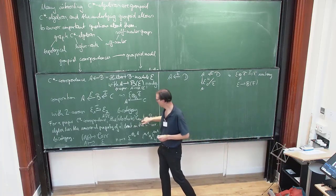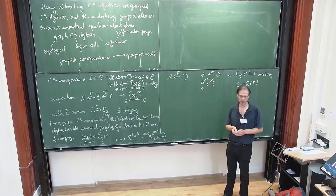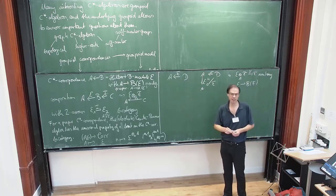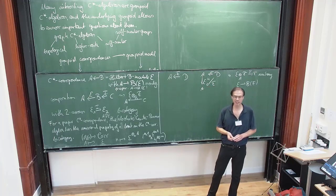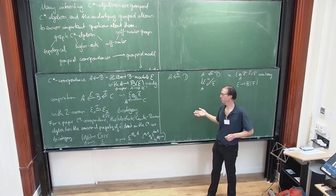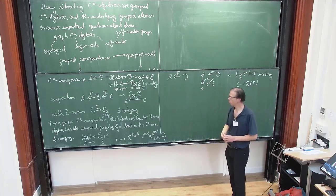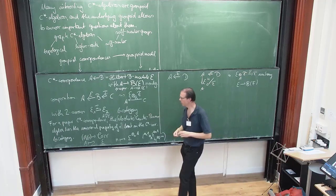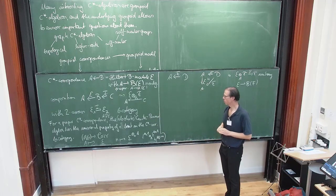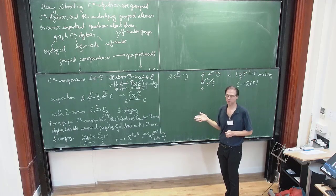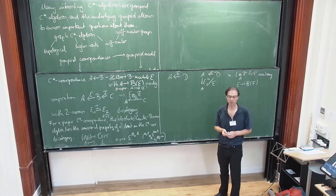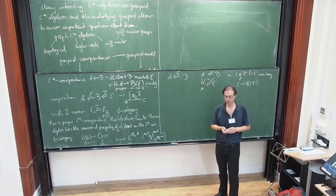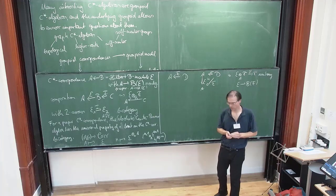When I say absolute Cuntz-Pimsner algebra, I mean that I really impose the Cuntz-Pimsner covariance condition on the whole C*-algebra A, which I can do. If the left action of E is not faithful, then we learn from Katsura that we should do something a bit different. So the limit of a single C*-correspondence is the Cuntz-Pimsner algebra. We see that Cuntz-Pimsner algebras and cross-products are now put under the same roof — they are both examples of limits of diagrams in this correspondence bi-category.